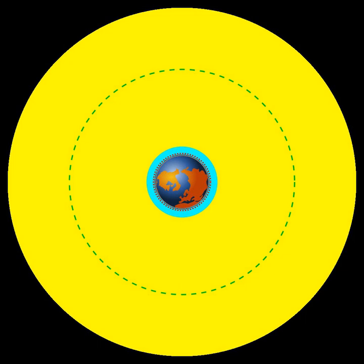High Earth orbit: geocentric orbits above the altitude of geosynchronous orbit (35,786 kilometers or 22,240 miles).